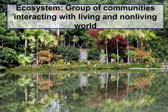An ecosystem is the next level in the hierarchical scale. This is a group of communities that are interacting with the living components of that system, as well as the non-living components — things like water and soil and air. When you take all of that together along with all the communities, now we're talking about the ecosystem level.